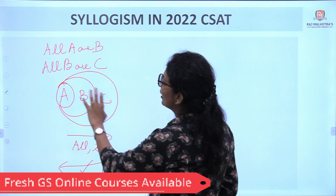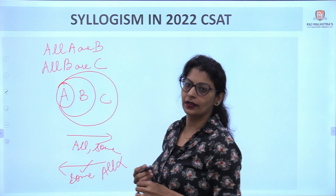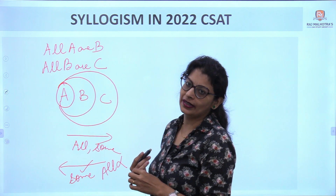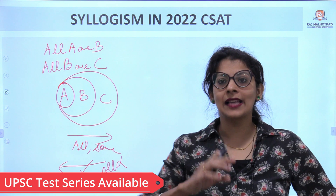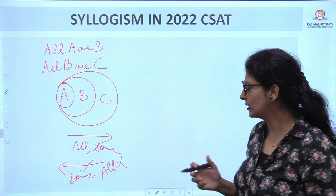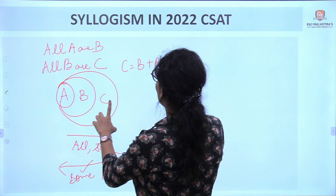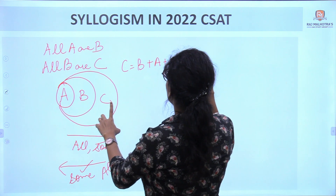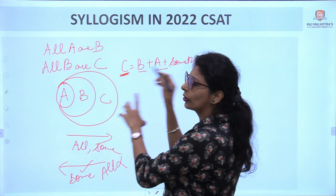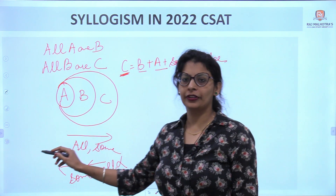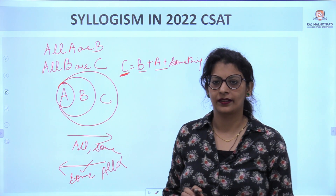When the conclusion is 'All C are A,' that means all of C is inside A. You cannot see this in the diagram, so 'All C are A' is completely false. When the conclusion is 'Some C are A,' that is true. So while reversing: 'some' is automatically true and 'all' is false.